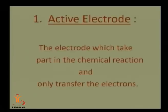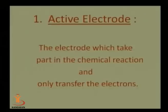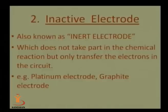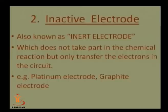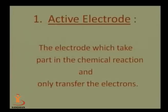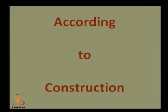An active electrode directly takes part in the reaction. The second type is an inactive electrode, also known as an inert electrode, which does not take part in the chemical reaction but only transfers electrons in the circuit. Examples of inactive electrodes are platinum electrode and graphite electrode. Inactive electrodes only transfer electrons without taking part in the reaction, while active electrodes both participate in the reaction and transfer electrons.